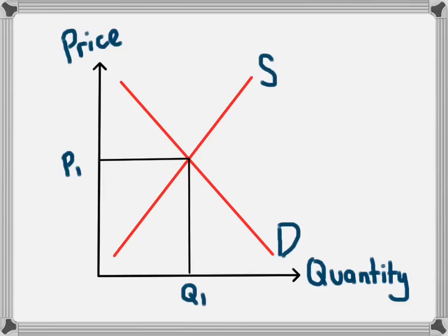We can see how we can arrive there if the price was not equal to P1. For example, if it was P2.